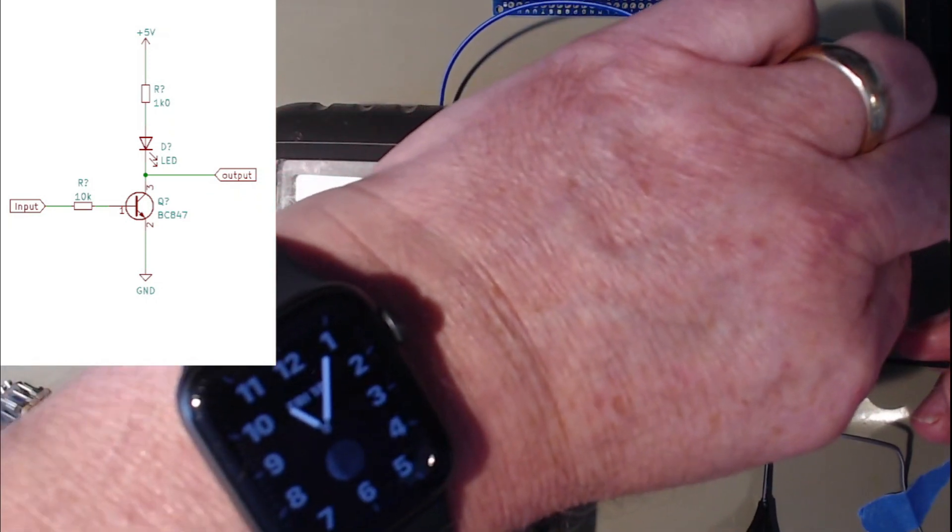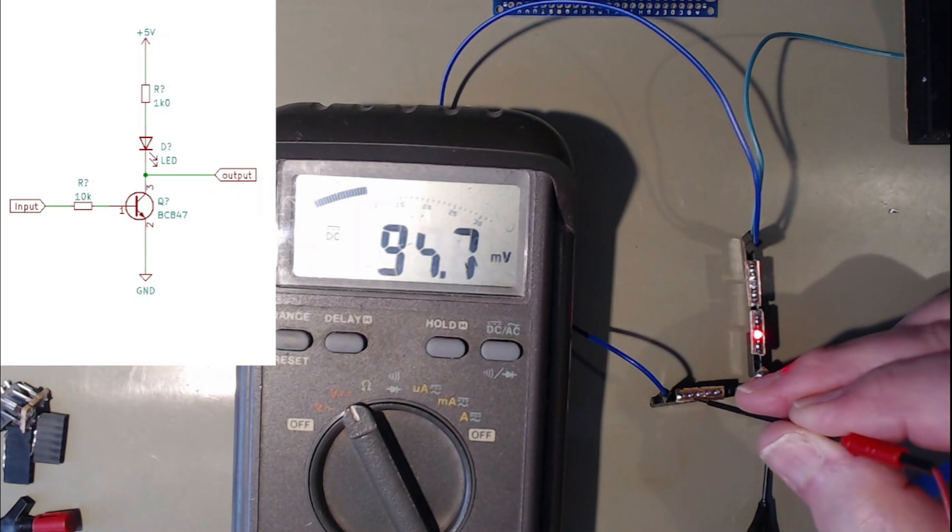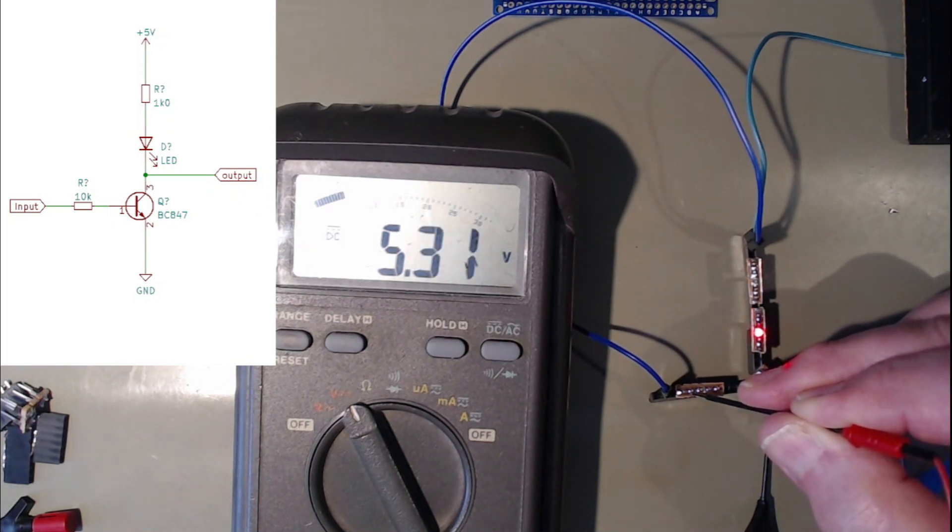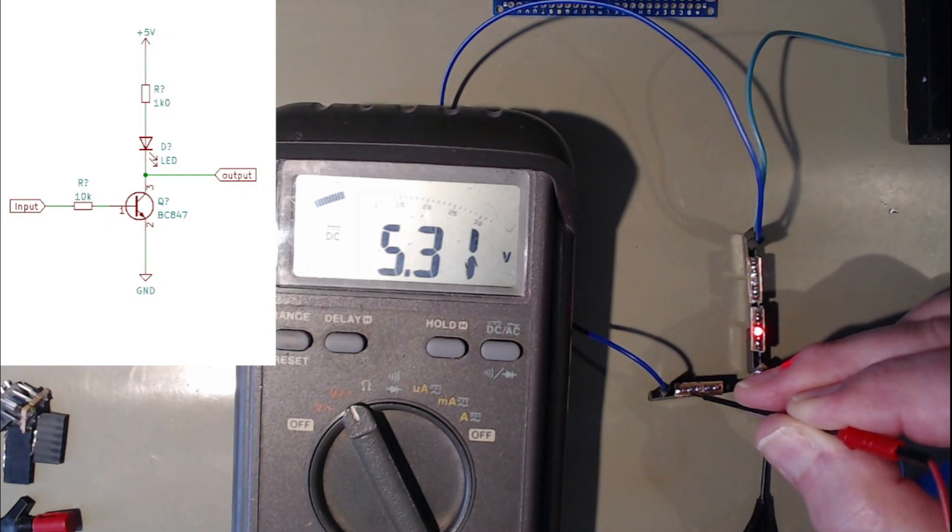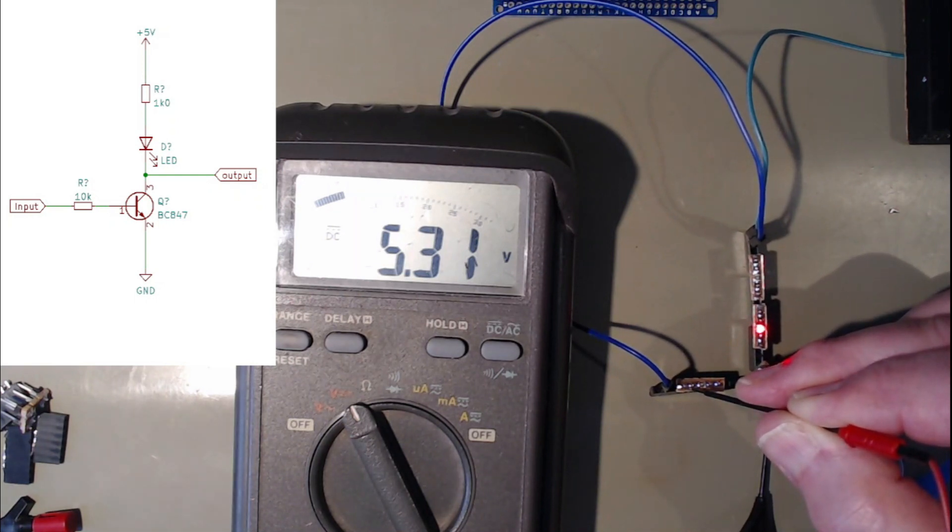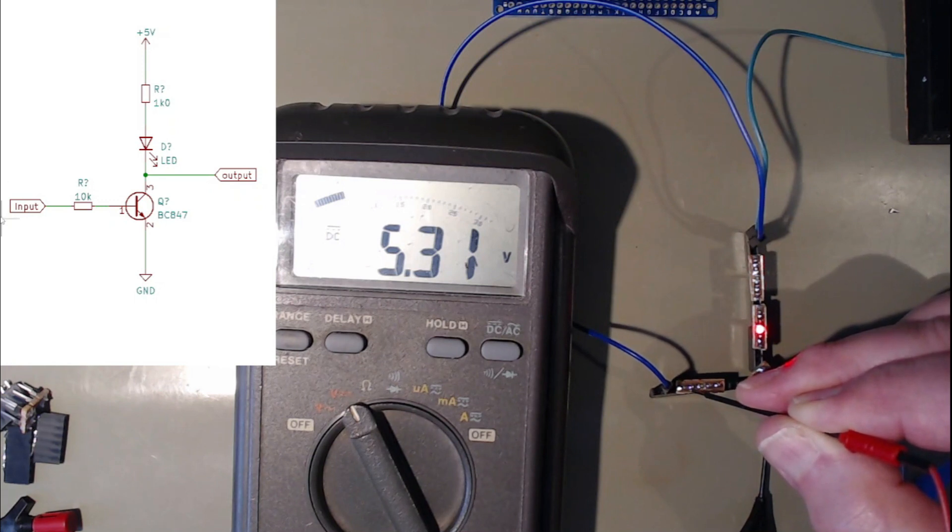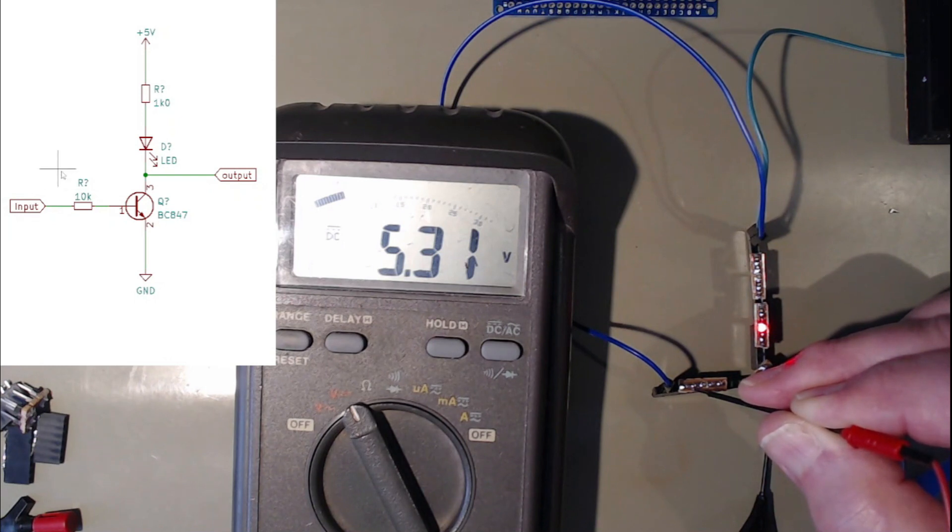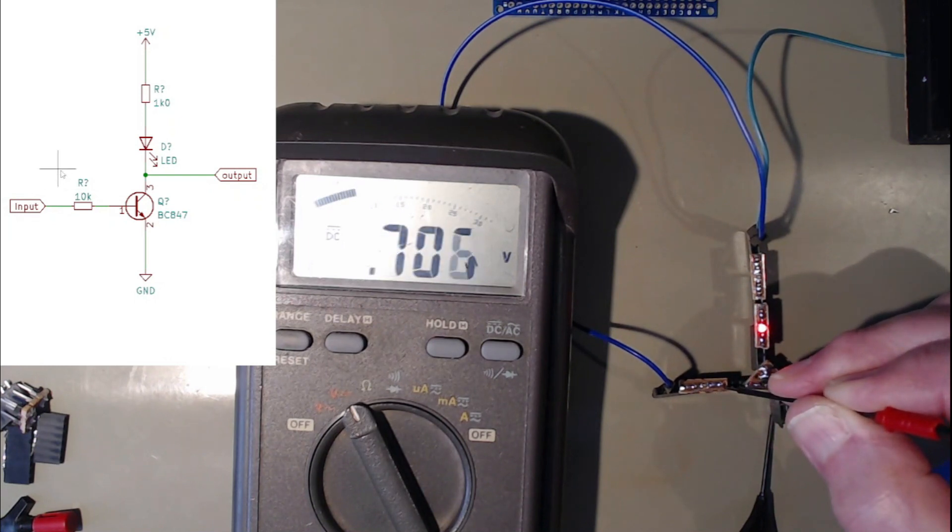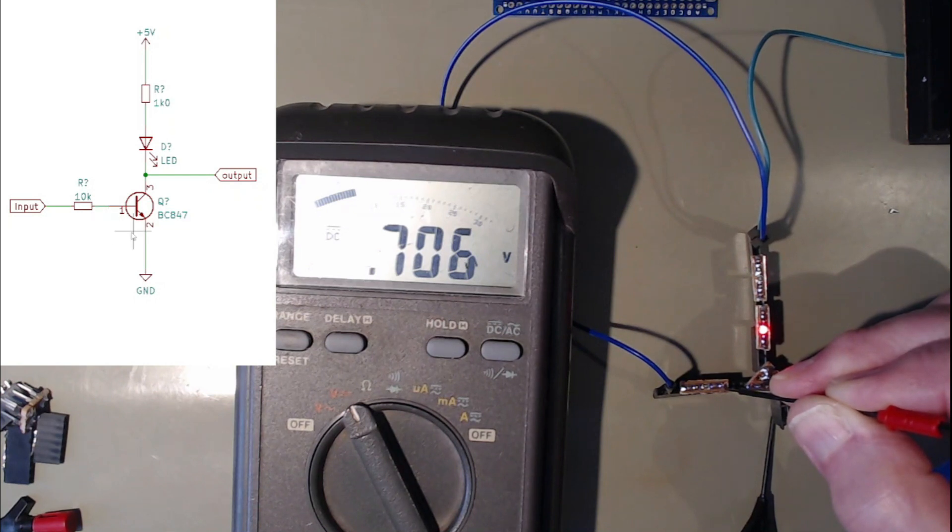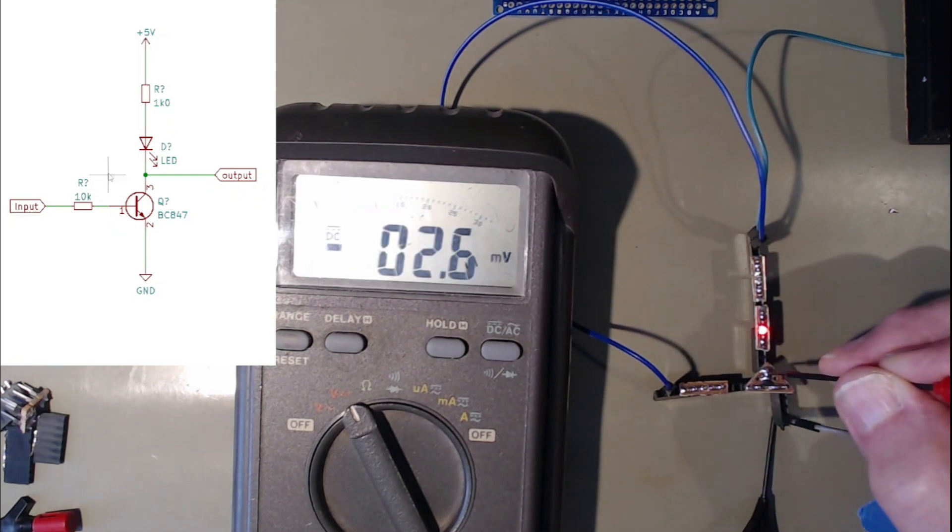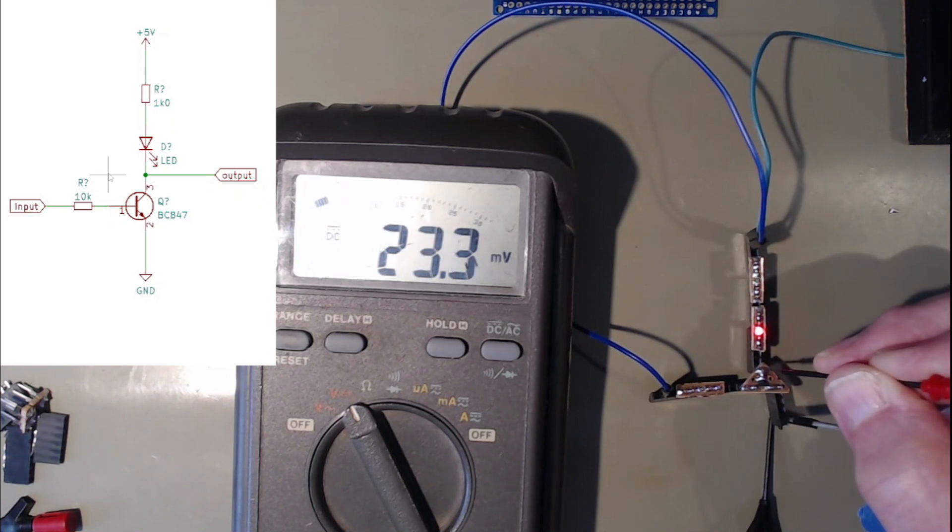Now if I put the base to high, we now have 5.3 volts on the input here. We have 5.3 volts on here, so we have current flowing in through the resistor. And we have 0.7 volt VBE between the base and the emitter. So that transistor is fully saturated. The LED is on and the collector is very low, 25 millivolts. So that's fully saturated.